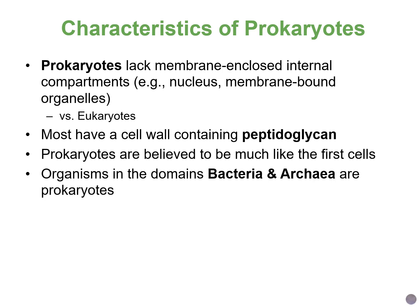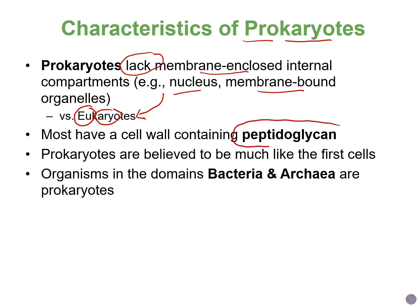The first cell type we're going to talk about are prokaryotes. 'Pro' refers to before, and 'karyo' refers to the nucleus — so these do not have a nucleus, nor do they have any membrane-enclosed organelles. Eukaryotes, with 'euk' meaning true nucleus, do have these structures. Most prokaryotes are bacteria, and bacteria have cell walls that contain peptidoglycan — a protein-sugar complex. Prokaryotes are older than eukaryotic cells, and organisms in the two domains — bacteria and archaea — are both prokaryotes.